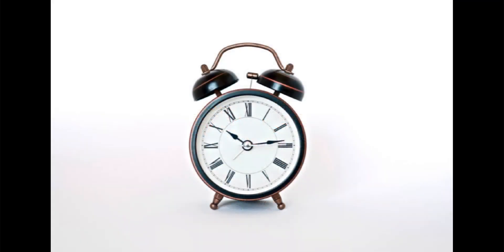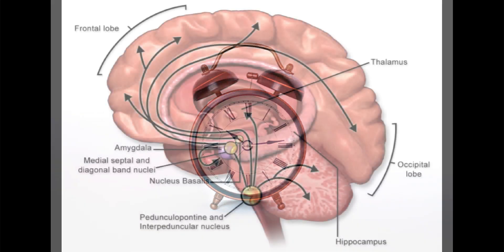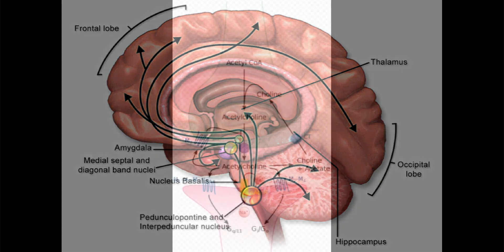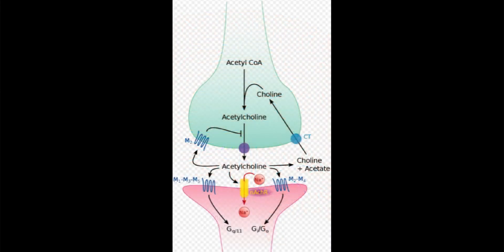The hippocampus loses 5% of its neurons every decade for a total loss of 20% by the time you're 80 years old.